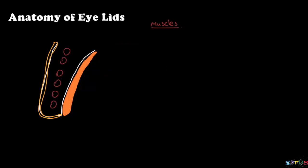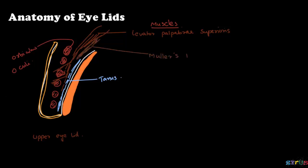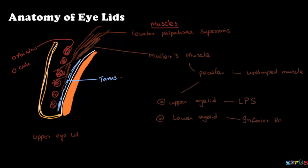Now coming to the muscles of the eyelids. There is the orbicularis oculi and the levator palpebrae superioris, which is inserted into the anterior aspect of the tarsal. This diagram shows the upper eyelid. There is another muscle called Müller's muscle, which has some peculiar characteristics — it is an unstriated muscle. In the upper eyelid it is derived from the levator palpebrae superioris, whereas in the inferior eyelid it is from the inferior rectus. The function of orbicularis oculi is to close, and that of the levator palpebrae and Müller's muscle is to lift up or open the eyelid.